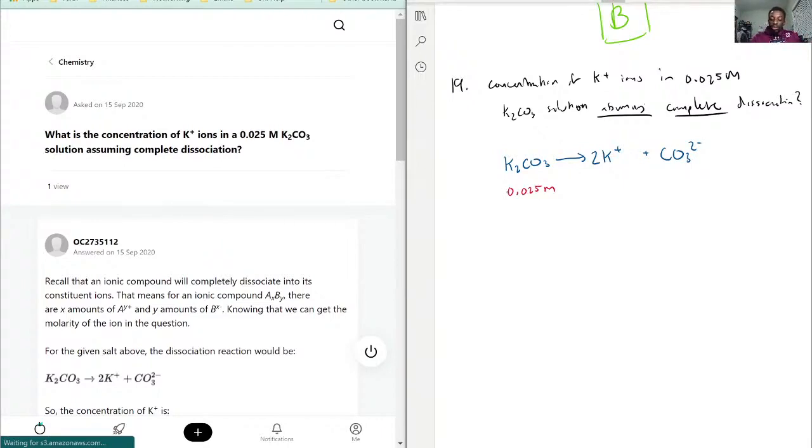To be able to convert, we would just solve it as with any conversion question. 0.025 moles of K2CO3, and you can see here based on this formula, one molarity of K2CO3 is equal to two molarities of K+.